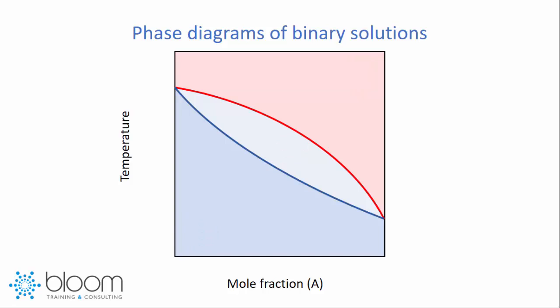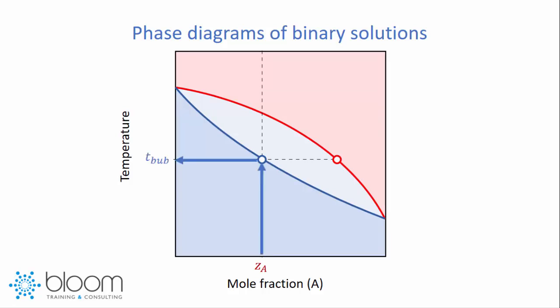Now let's see how you can use these graphs to figure out the dew and bubble points of a given system. So let's say that the mole fraction of A in your system is ZA. In order for you to get the bubble point, all you have to do is read it off the blue line. That is the reason for which the blue line is known as the bubble point curve. Likewise, if you want to find out the dew point of your system, all you have to do is read the temperature of the red line. And that is the reason why the red line is known as the dew point curve.